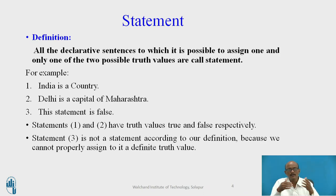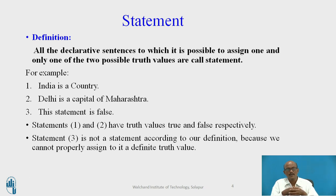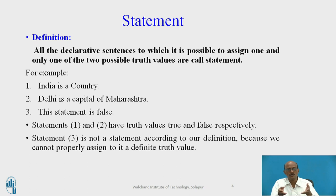The definition: all declarative sentences to which it is possible to assign one of only two possible truth values — either true or false. For example: 'India is a country' is true, 'Delhi is the capital of Maharashtra' is false, and 'This statement is false' cannot be assigned either true or false, so according to our definition, it cannot be a statement.